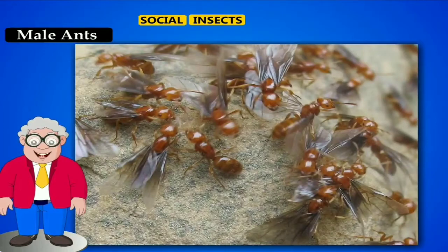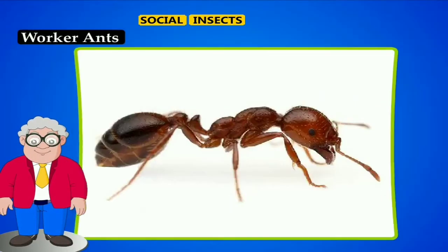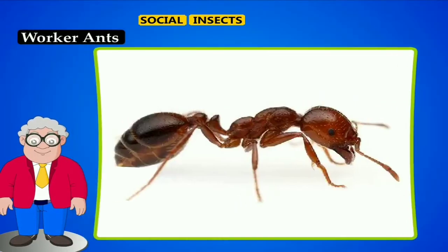Number 2: Male ants. There are some male ants in an ant colony. They die shortly after mating. Number 3: Worker ants. Most of the eggs develop into wingless, sterile females called worker ants.